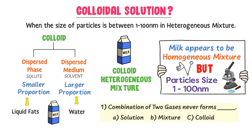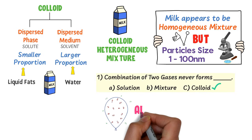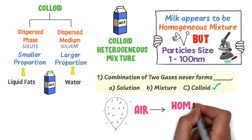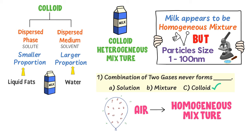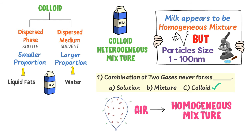Here is a bonus MCQ: the combination of two gases never forms a solution, mixture, and colloid. The answer is colloid. For example, consider air — air is a homogeneous mixture of different gases like nitrogen and oxygen. So the combination of gases never forms heterogeneous mixtures and never forms colloids.